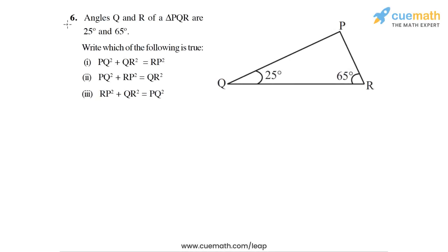In question 6 of this exercise, the problem statement says angles Q and R of a triangle PQR are 25 degrees and 65 degrees. So this angle, angle Q is 25 degrees, this angle, angle R is 65 degrees.